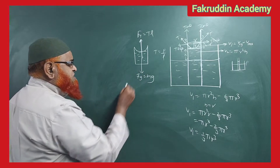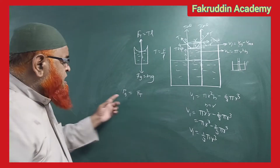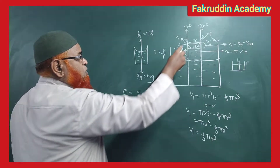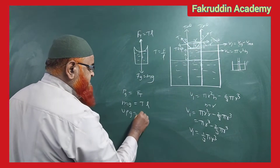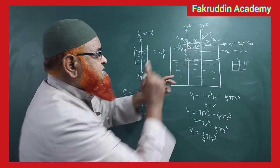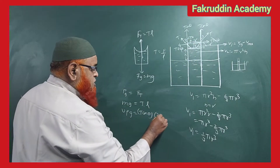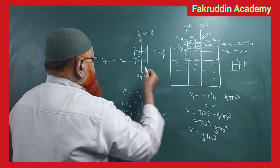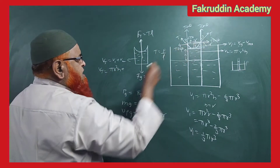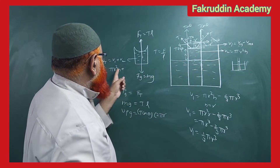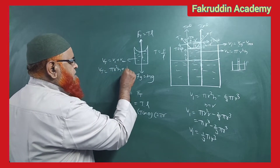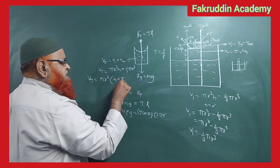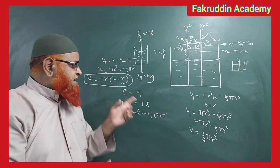These two forces are equal and opposite so the liquid is in equilibrium. Force due to gravity equals mass times g; force due to tension is T cos theta times length, where length is the circumference 2 pi r. Mass equals total volume times density times g. The total volume is V1 plus V2, which equals pi r squared h plus 1/3 pi r cubed. Factoring out pi r squared gives pi r squared times (h + r/3). So the total volume is pi r squared (h + r/3).